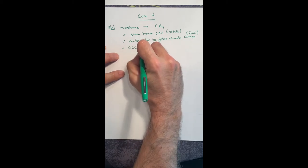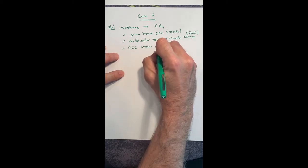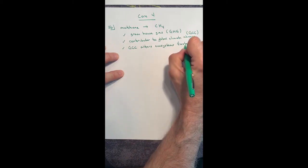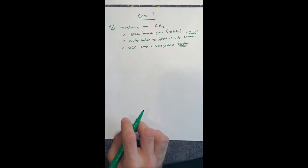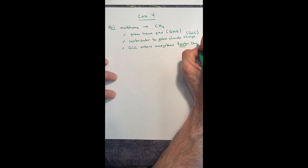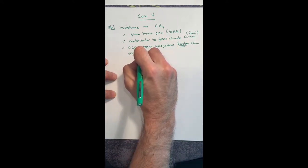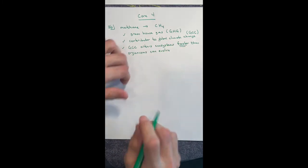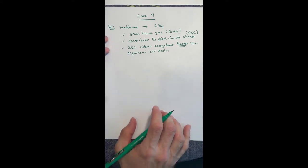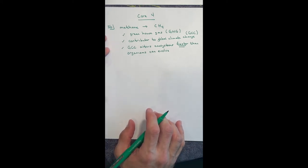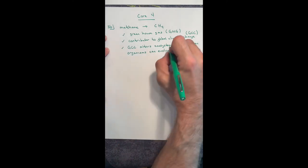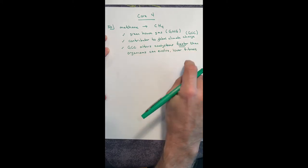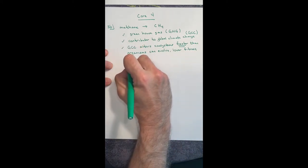Global climate change alters or changes ecosystems. Here's the key word: faster. We're changing the climate faster than organisms can evolve in response. Or adapt. Adaptation and evolution are the same thing. So global climate change alters ecosystems faster than organisms can evolve. Well, what does that lead to?